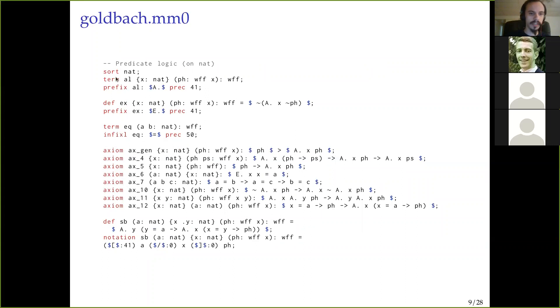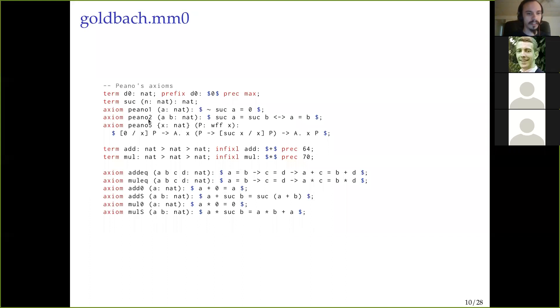Okay, so let me give you an example of what an MM0 file actually looks like. So, here we're defining a sort, which is called WFF. We define implication. We define negation as primitive constructors. And then we can write down the axioms of classical propositional logic. We can make some definitions saying, okay, here's what and is. Here's what if and only if is. Here's what or is, and so on.